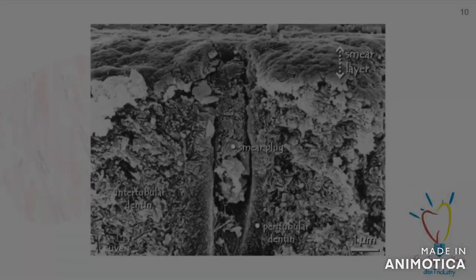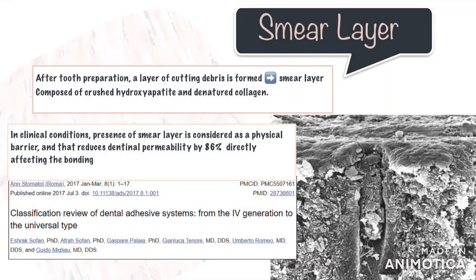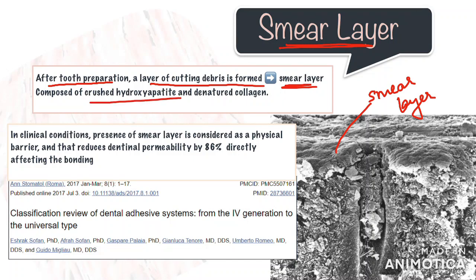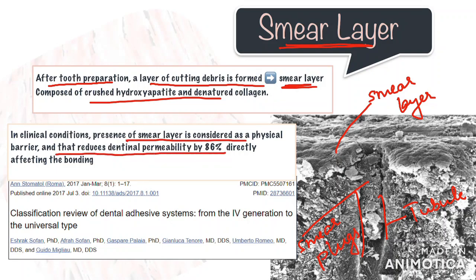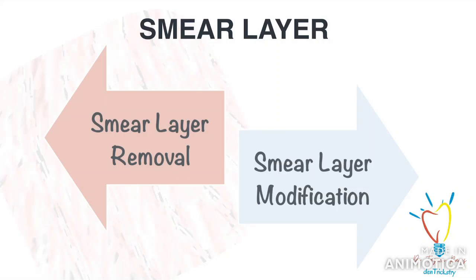Dentine also contains vital processes of the pulp, the odontoblasts, which makes it a sensitive structure. One of the most important factors in dentine bonding is the presence of the smear layer. When we prepare the tooth, the tooth surface is covered with a layer of cutting debris called the smear layer. This consists of residual organic and inorganic components — mainly crushed hydroxyapatite crystals and fragmented, denatured collagen. This cutting debris also obstructs the orifices of dentinal tubules to a depth of 1 to 10 microns, known as smear plugs. The smear layer reduces dentine permeability by 86 percent, directly affecting bonding.